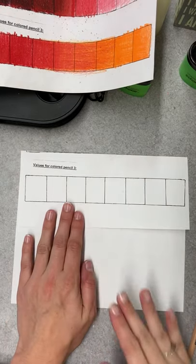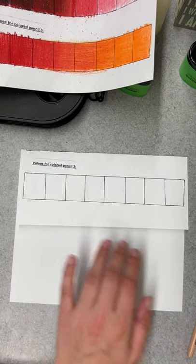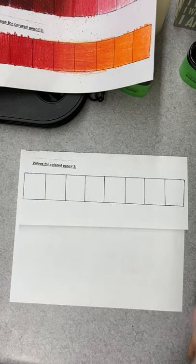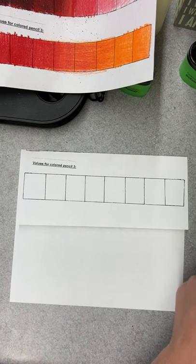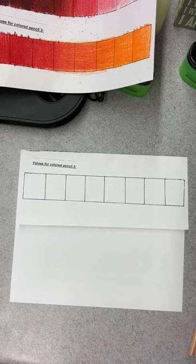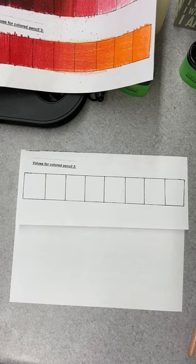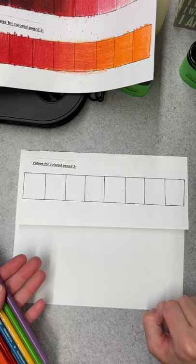All right, for our last value scale on this worksheet, I want you guys to grab a bunch of your colors. So you're gonna need every color in the rainbow or every color in the color wheel: orange, red, yellow, blue, green, and purple. And of course, you can have your white and blender pencil ready to go as well.